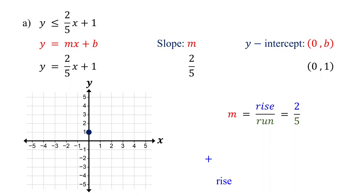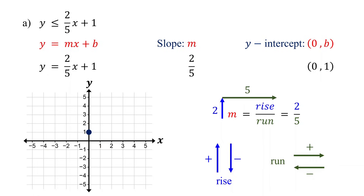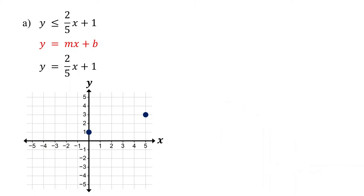When the rise is positive, we move up, and when it's negative, we move down. Here, the rise is positive two, so we move up two units. When the run is positive, we move to the right, and when it's negative, we move to the left. Here, the run is positive five, so we move to the right five units. Start at the y-intercept and move up two units, then move to the right five units and plot the second point. Finally, draw the boundary line that passes through these points.